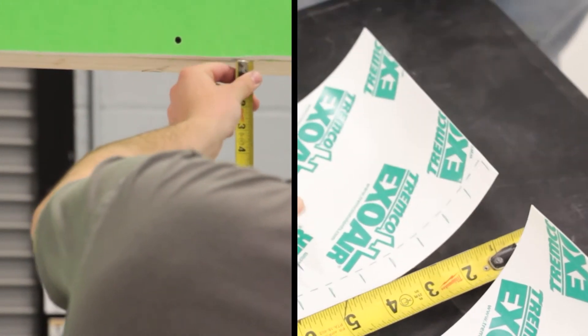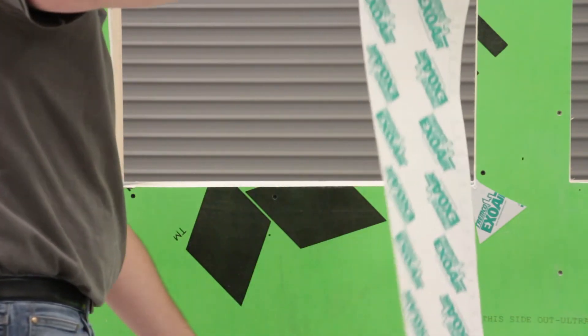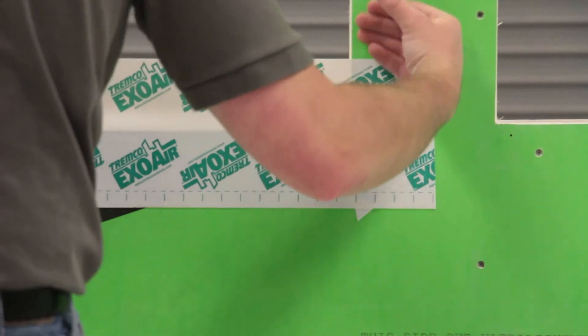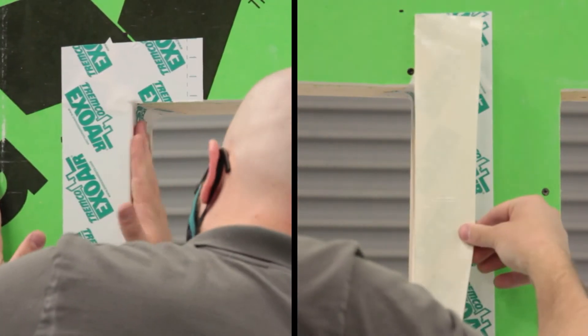Next, measure the opening and cut the ExoAir 110AT to length, extending at least three inches on all sides. Install the ExoAir 110AT starting with the sill, then the jams, and finally the header.